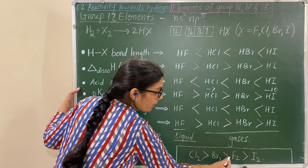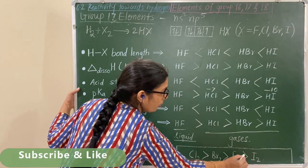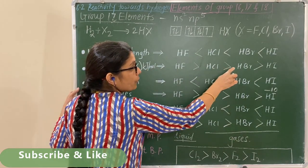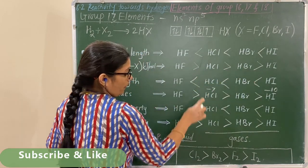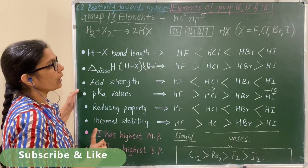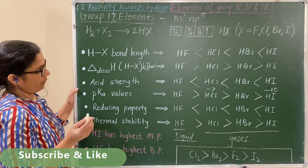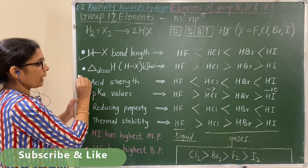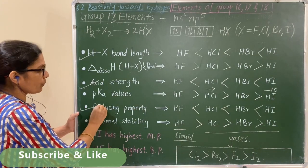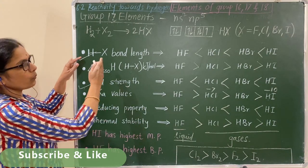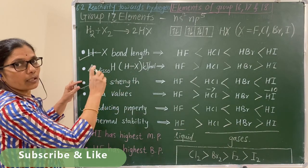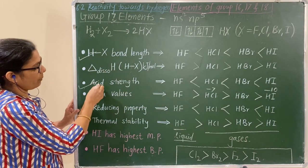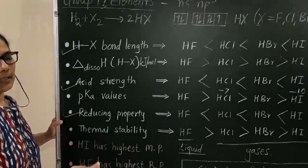Remember: bond dissociation enthalpy of hydrogen halides is in the order HF > HCl > HBr > HI. Bond length, acid strength, and reducing property increase down the group. A weaker bond gives H+ ions easily, so acid strength and reducing property increase, while the remaining properties such as thermal stability decrease.